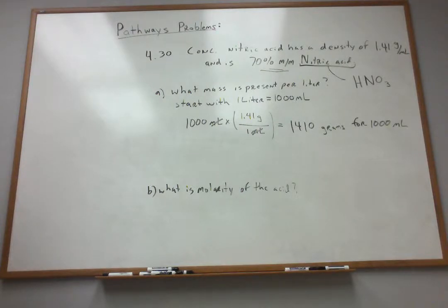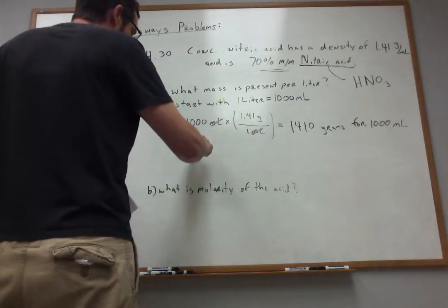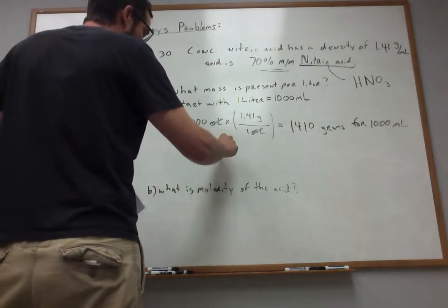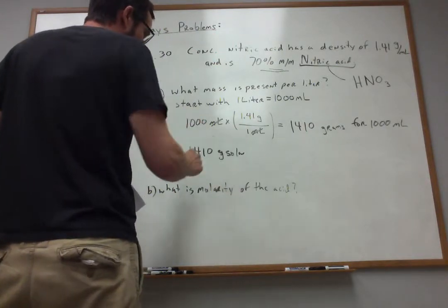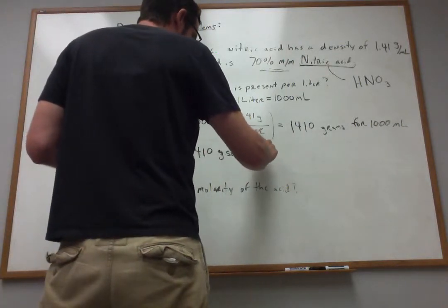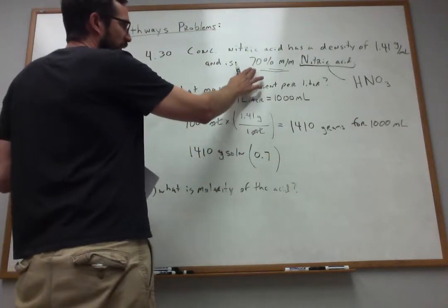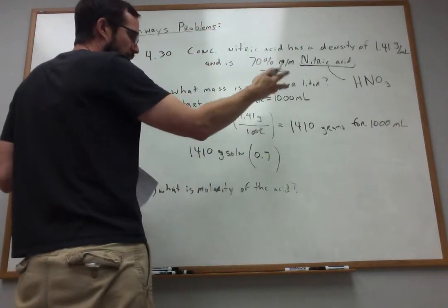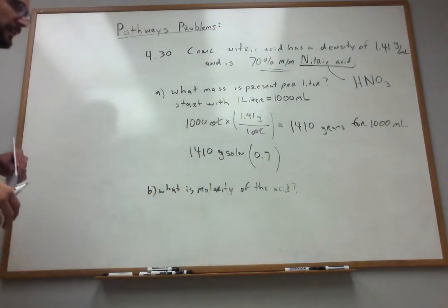What percentage of the mass is HNO3? So hopefully that makes sense because if the total solution mass is 1410 grams, I multiply that by a mass fraction. Now, here that's 0.7, which corresponds to the 70 percent. So 70 out of 100 is a percent. 0.7 out of 1 is a mass fraction.